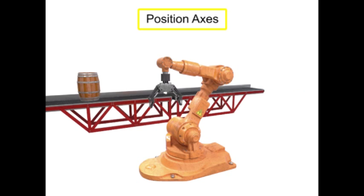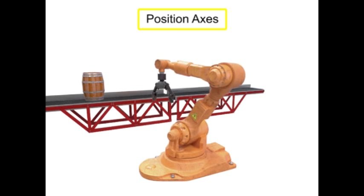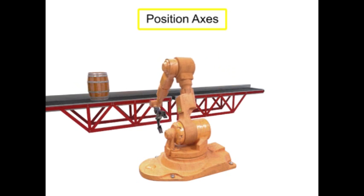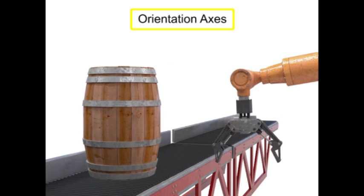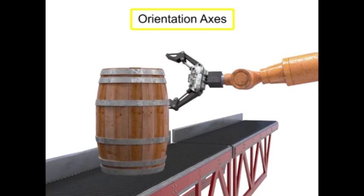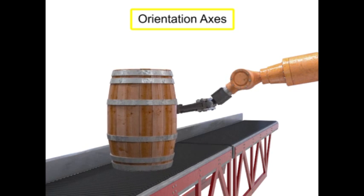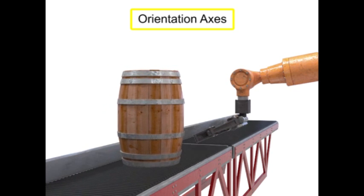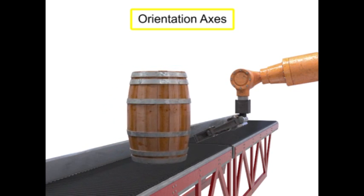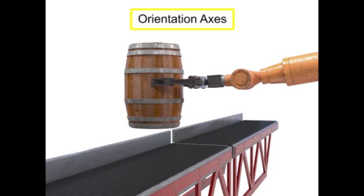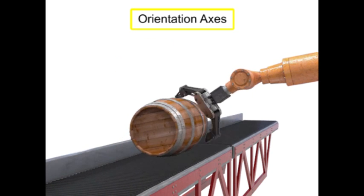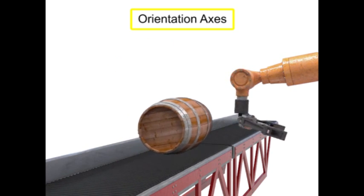The position axes movement at the waist, shoulder, and elbow, along with the orientation axes movement of pitch, roll, and yaw, allow the robot to accomplish its tasks within the work envelope.